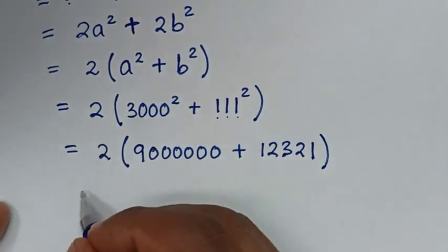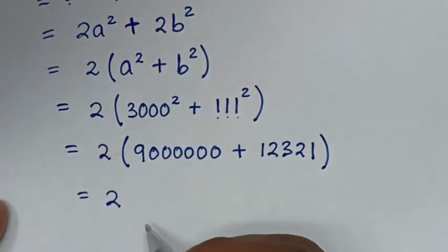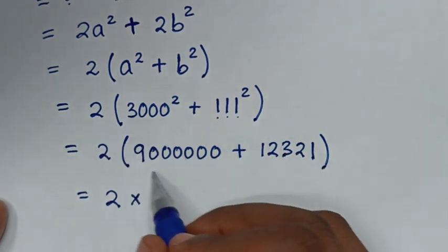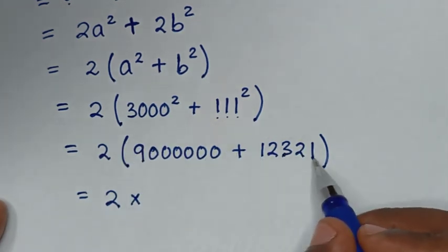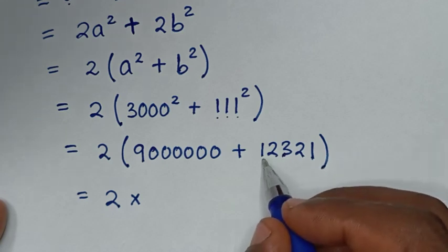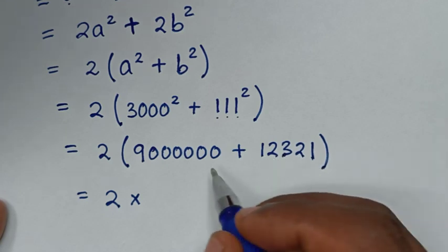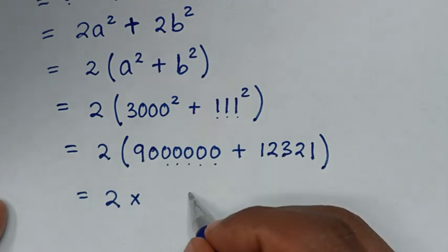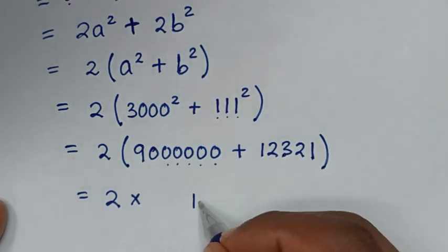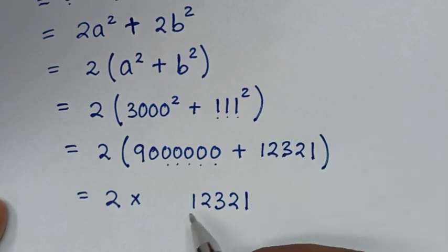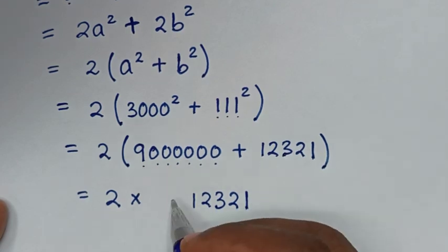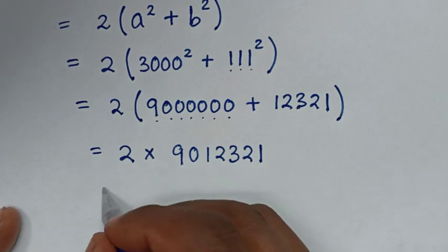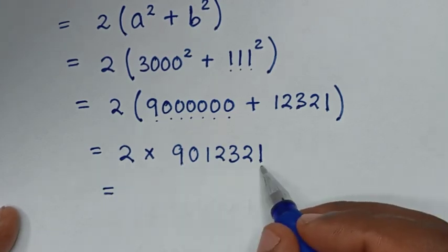Then, it will be equal to 2 times the sum inside the bracket — that is 9,000,000 plus 12,321. Adding these together gives us 9,012,321 inside the bracket.